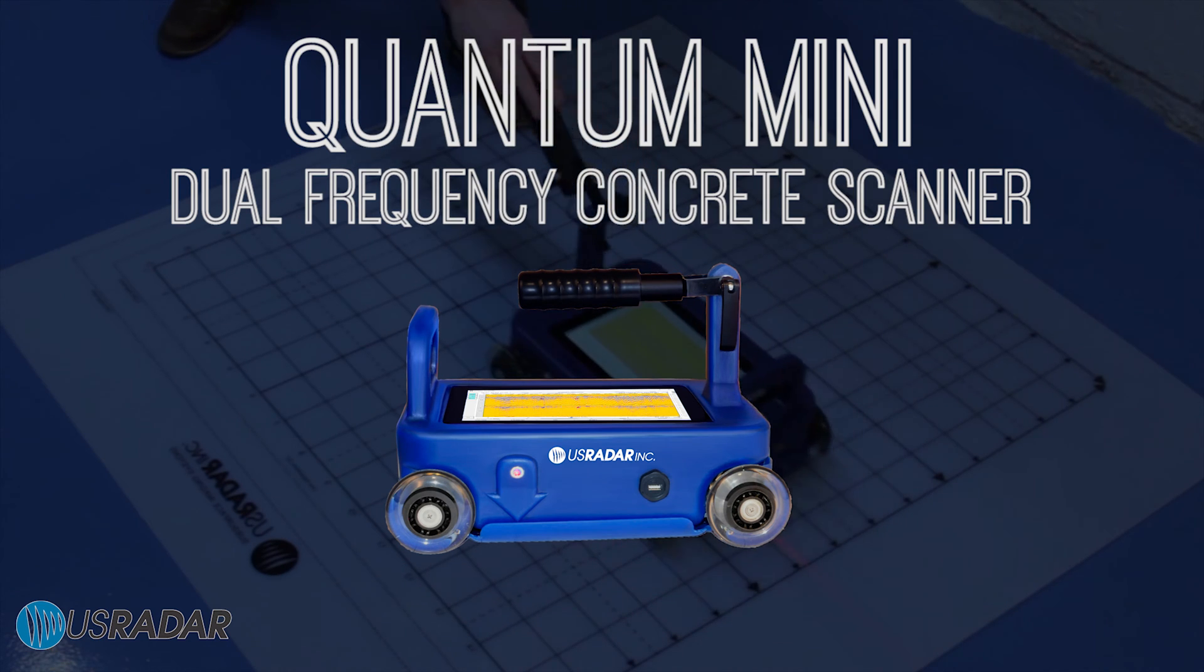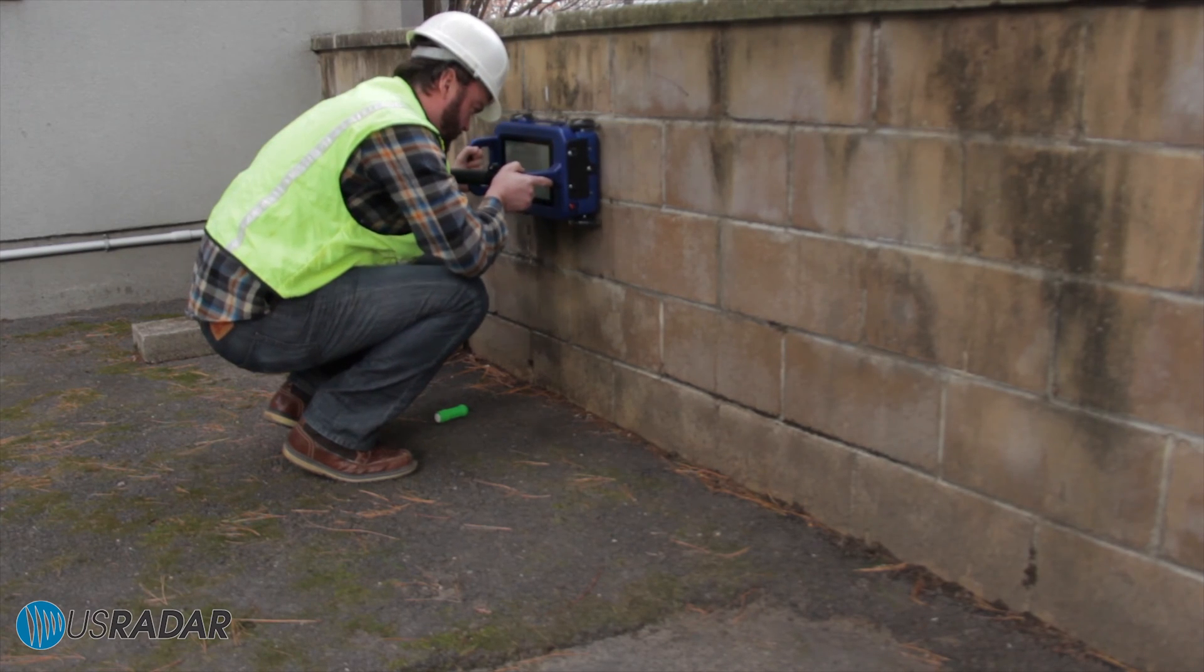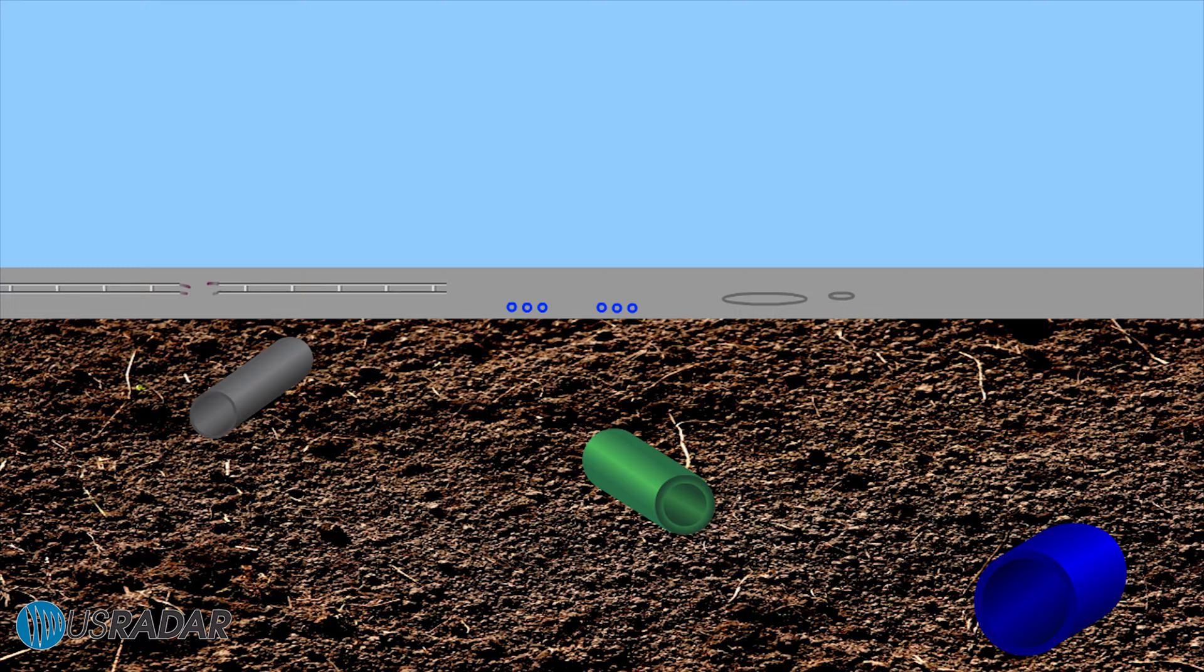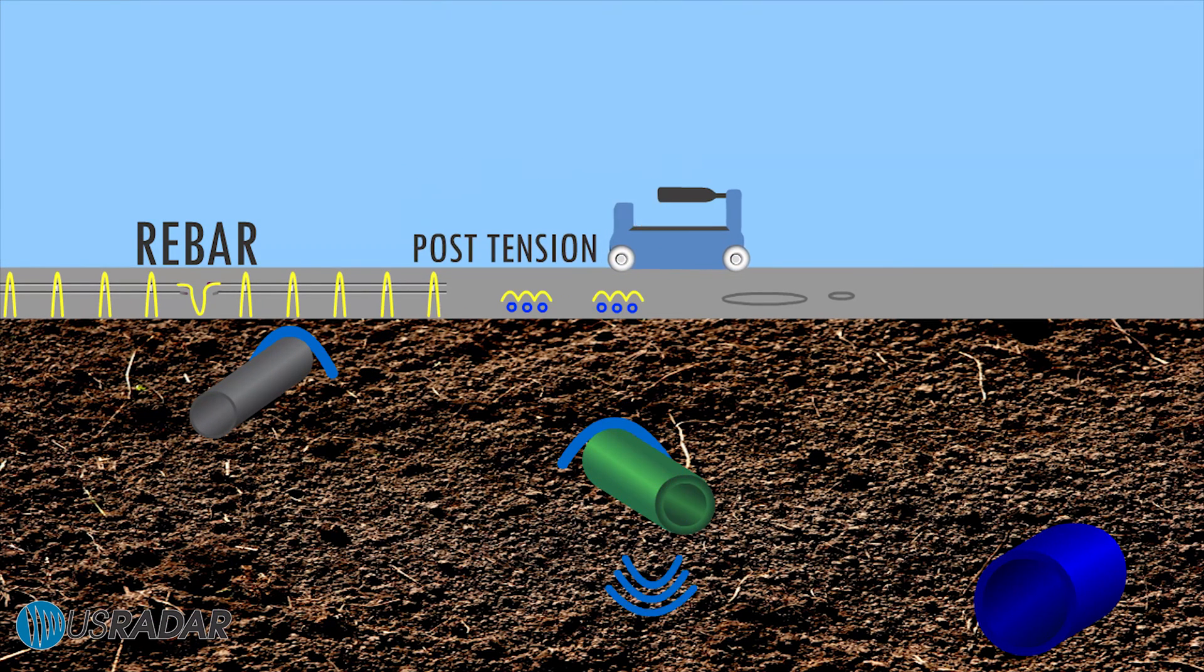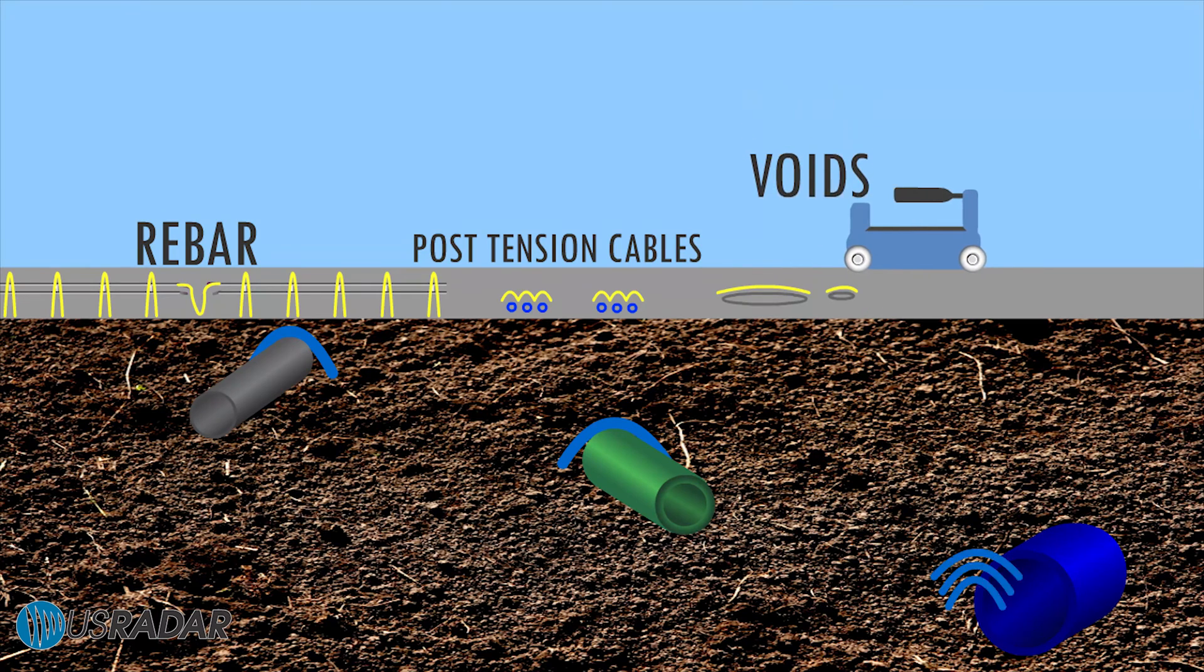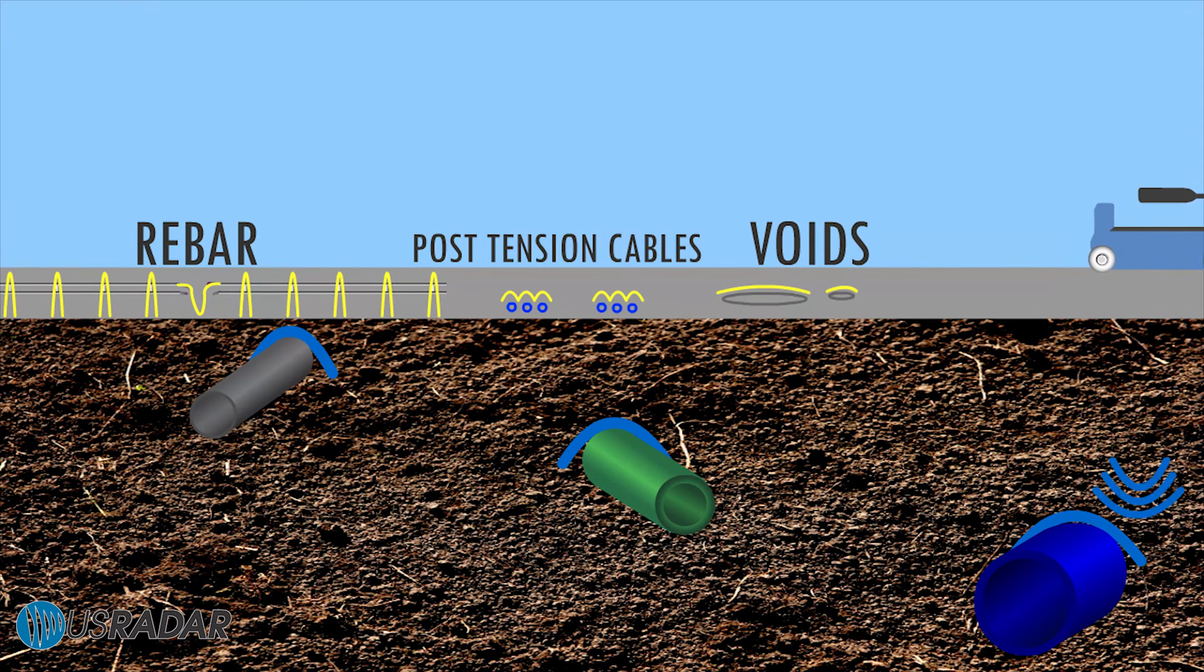Its dual-frequency system enables users to conduct high-resolution scans at shallower depths to detect characteristics in concrete such as rebar, post-tension cables, and voids, and with the lower frequency bandwidth to detect deeper anomalies below the concrete such as pipes, cables, and conduits.